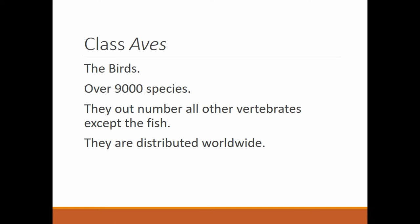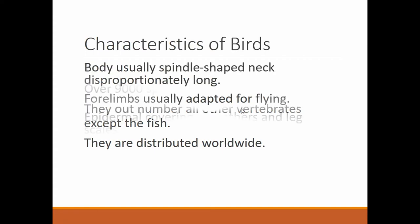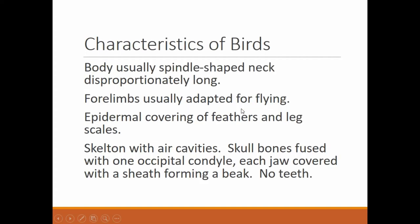There are over 9,000 species of birds. They outnumber all other vertebrates except fish. They are distributed worldwide — and since you can fly, it's pretty easy to get anywhere you need to go. So they are found everywhere.